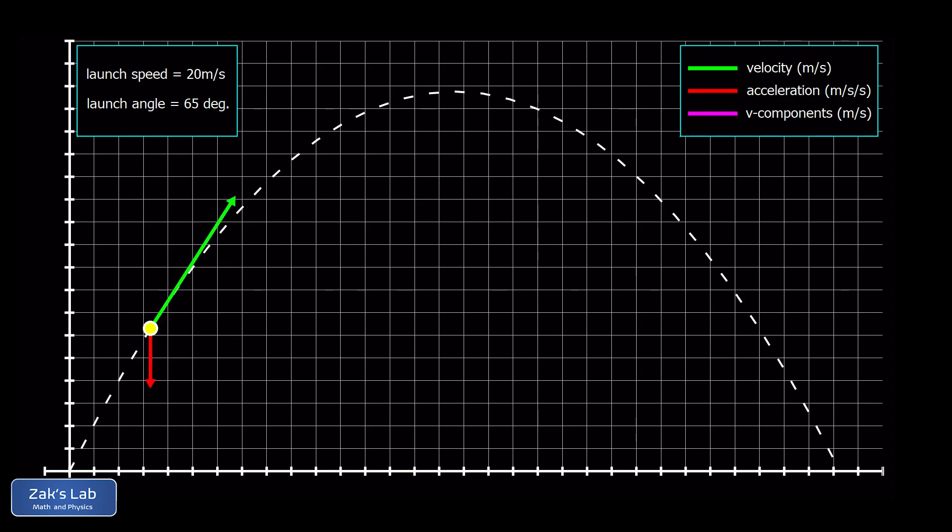Our acceleration vector is shown in red, and that's the acceleration caused by gravity. That's a constant downward acceleration with a magnitude of g, or 9.8 meters per second squared.